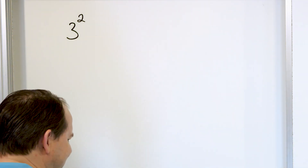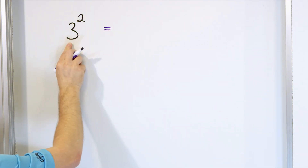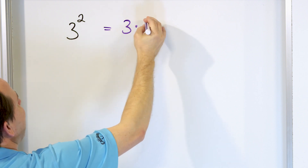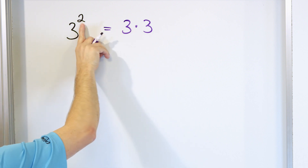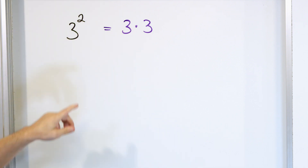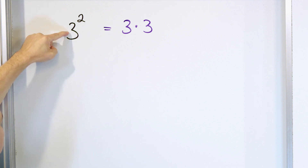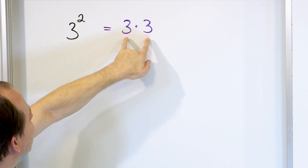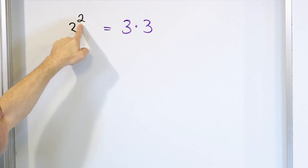Now what does this actually mean? You take the bottom number — we call it the base — and you multiply it by itself. How many 3s do I have here? I have 2 of them because it's 3 squared. That's why I say it's a shortcut for multiplication. You take the base, the bottom number, and you multiply it by itself. How many of these are in the multiplication? It is the number we have in the exponent.